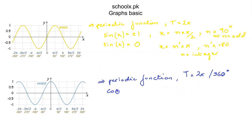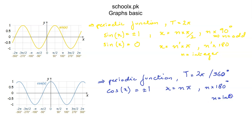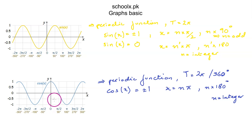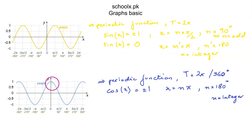From the graph we know that cosine of x is positive or negative 1 when x is an integer multiple of π, or an integer multiple of 180 degrees. For example, at negative π cosine is negative 1, at positive π cosine is negative 1, and at 0 cosine is positive 1. And we can see that the graph of cos x is symmetrical about the y-axis — the y-axis acts as the middle line for cosine of x.